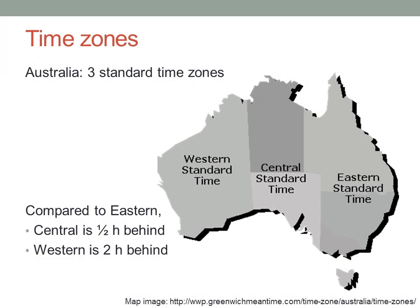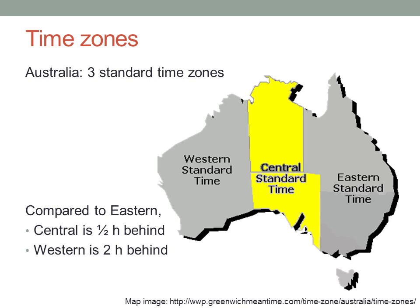In Australia, there are three time zones: Eastern Standard Time in the eastern states Queensland, New South Wales, Victoria, Tasmania and the ACT; Central Standard Time in South Australia and the Northern Territory; and Western Standard Time in Western Australia.